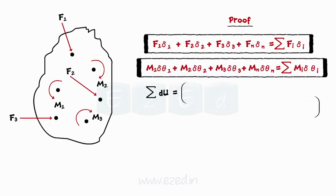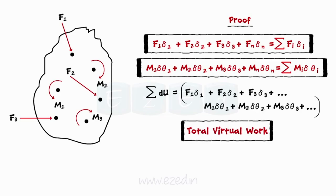Hence, the total work done due to linear forces and angular forces is given by summation δu which is equal to the summation of forces times virtual linear displacements and couple moments times virtual angular displacements. This is the total virtual work done due to all the forces and the couples.